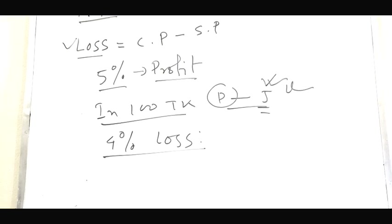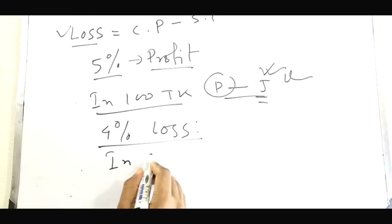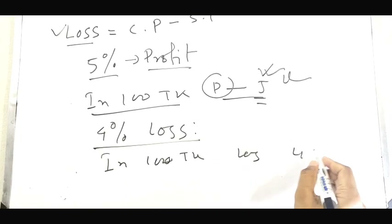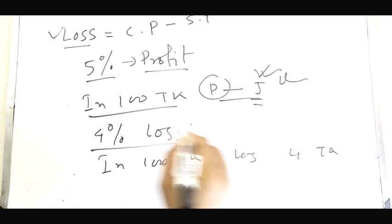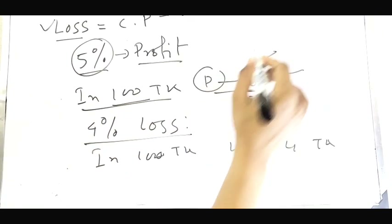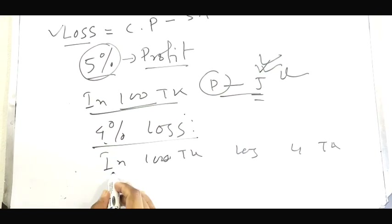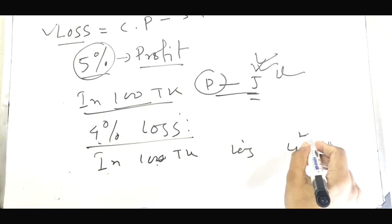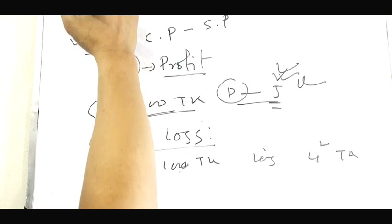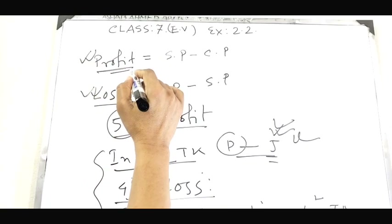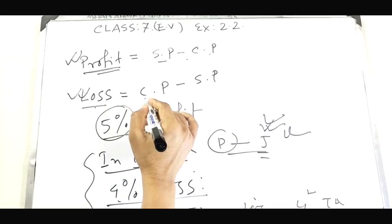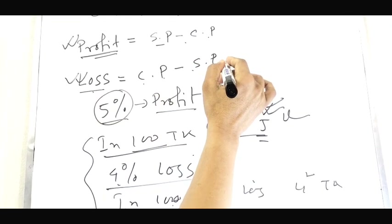What do you mean by 4% loss? Similarly, when cost price is 100, loss is 4%. Profit equals selling price minus cost price. And Loss equals cost price minus selling price.